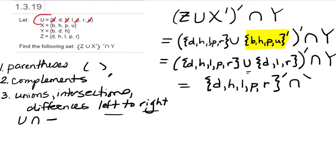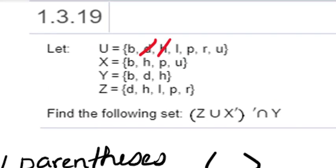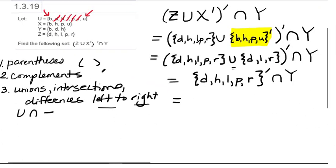So now we go to the next step. We're going to find the complement of {d, h, l, p, r}. So we take out d, h, l, p, and r, and all that's left are b and u. So the complement of that set is just {b, u}, and we want to intersect that with Y.